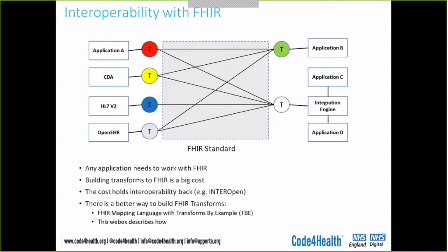This talk is about improved and more cost-effective ways of building those FHIR transforms. There are two ingredients: one is the FHIR mapping language, which is a language deliberately intended for building FHIR transforms, developed by Graham Grieve as part of the FHIR STU3 standard. And secondly, a tool you can use with that called Transforms By Example — TBE for short. Those are the two main things to be covered here.